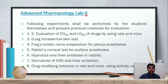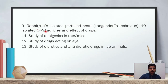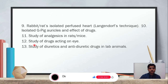The fifth subject is Advanced Pharmacology Lab 2. Following experiments shall be performed by students and a practical notebook prepared for evaluation: evaluation of ED50 and LD50 of drugs using rats and mice, guinea pig intradermal skin test, frog's sciatic nerve preparation for plexus anesthesia, rabbit's corneal test for surface anesthesia, hypnotics and their antidotes in rabbits, stimulants of CNS and their antidotes, drug modifying behavior in rats and mice using the activity method, isolated rat and rabbit Langendorff perfusion technique, isolated guinea pig atria and effect of drugs, study of analgesics in rats and mice, study of drugs acting on the eye, and study of diuretics and anti-diuretic drugs in lab animals.